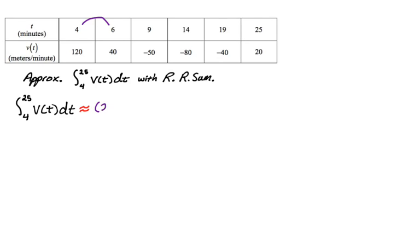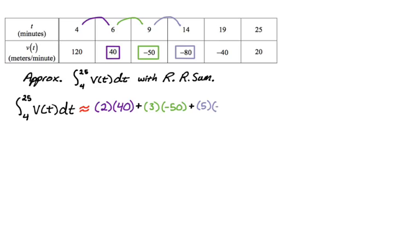Now we just go for it. The first width is two, and now we need the right endpoint — that'll be 40 in this case. Plus, a new width is three, and the right endpoint is negative 50. Then a width of five with a right endpoint of negative 80. Again, five for the width with a right endpoint of negative 40. And finally, that's six, with the right endpoint at 20.